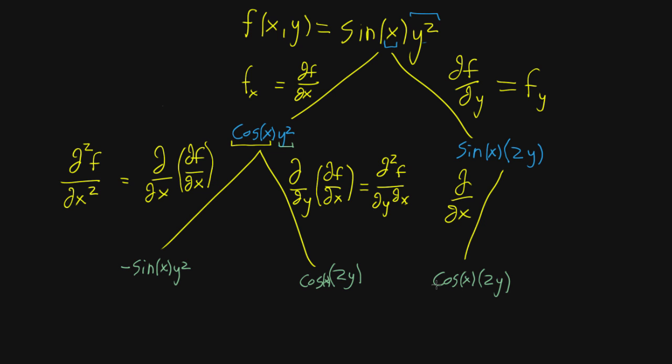A pretty cool thing worth pointing out that maybe you take for granted or maybe you think it's as surprising as I did when I first saw it. Both of these turn out to be equal, even though it was a very different way that we got there. You first take the partial derivative with respect to x and get cosine x y squared, which looks very different from sine x two y. Then when you take the derivative with respect to y, you get a certain value, and when you go down the other path you also get that same value.